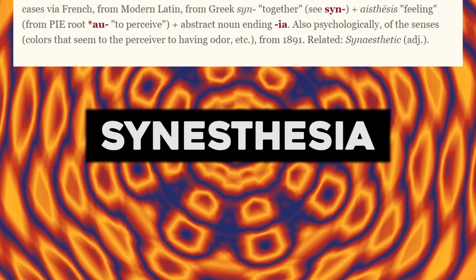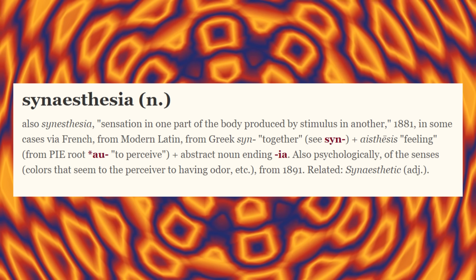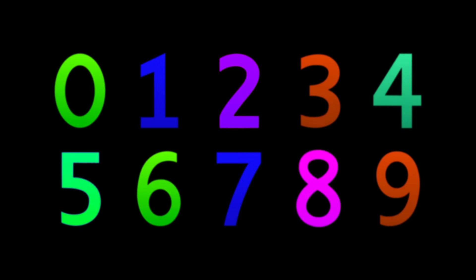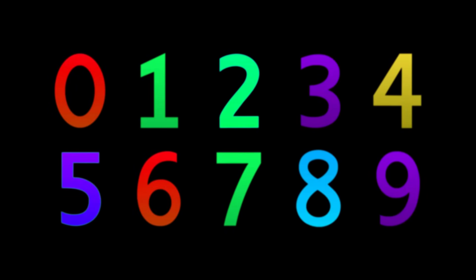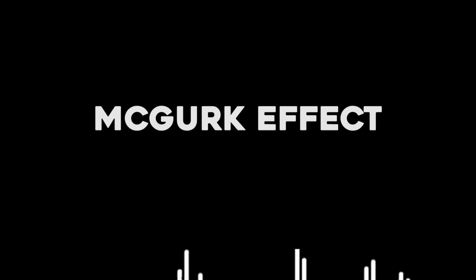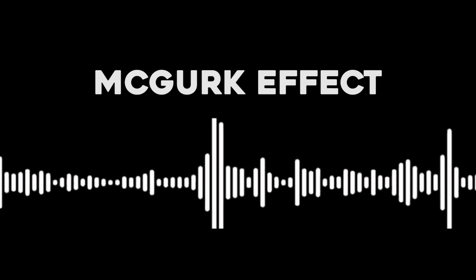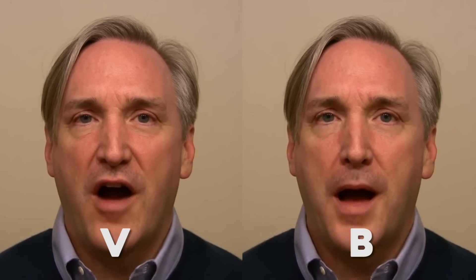There are a few other examples of this, like synesthesia, a word that traces back to Greek words that mean 'together sensation.' People with synesthesia can associate things like numbers and colors, so two might be violet and five might be yellow. There's also the McGurk effect, where the same sound can elicit different perceptions based on how we see a person speaking that sound. Our visual perception and auditory perception become intertwined.